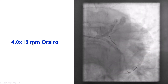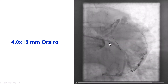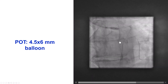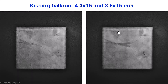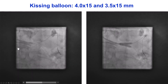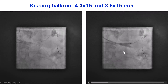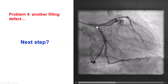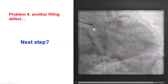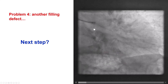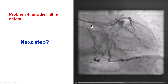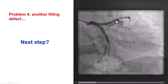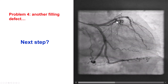A 4.0 by 18 mm stent was deployed across the ostium of the LAD. We did a proximal optimization technique, rewired the LAD, and did kissing balloon inflation. This provided an excellent result in the left main. But the problems did not stop — the same filling defects we saw now appear within the LAD stent that was recently placed.